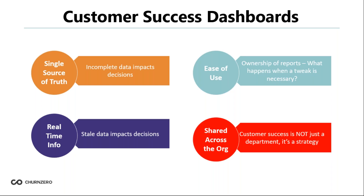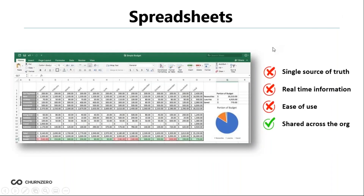Having this data readily available for other departments really starts to help keep customer success top of mind. With those four key areas defined, let's look at common options. I won't spend too much time on spreadsheets since not as many people are using them as I expected, but the problem with Excel is it becomes difficult to maintain — it's very manual to update, and it's only as real-time as the amount of time you're spending in it.